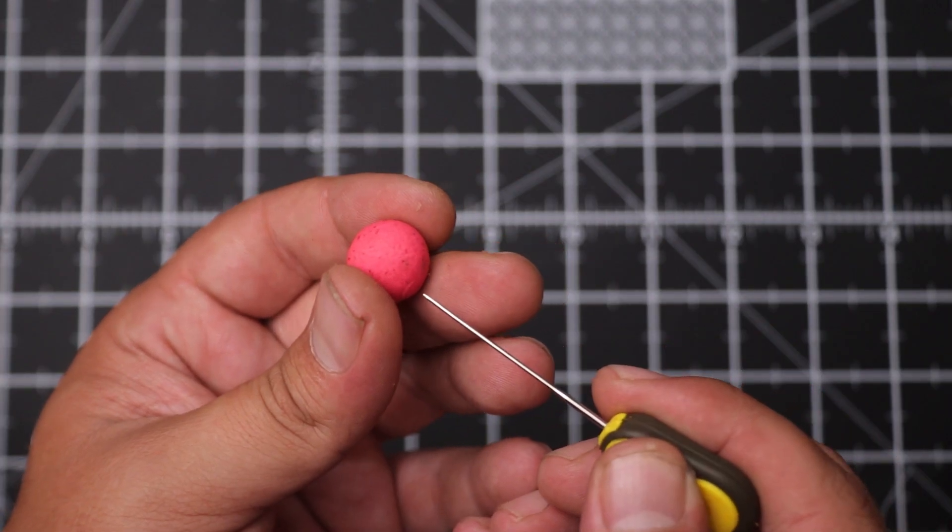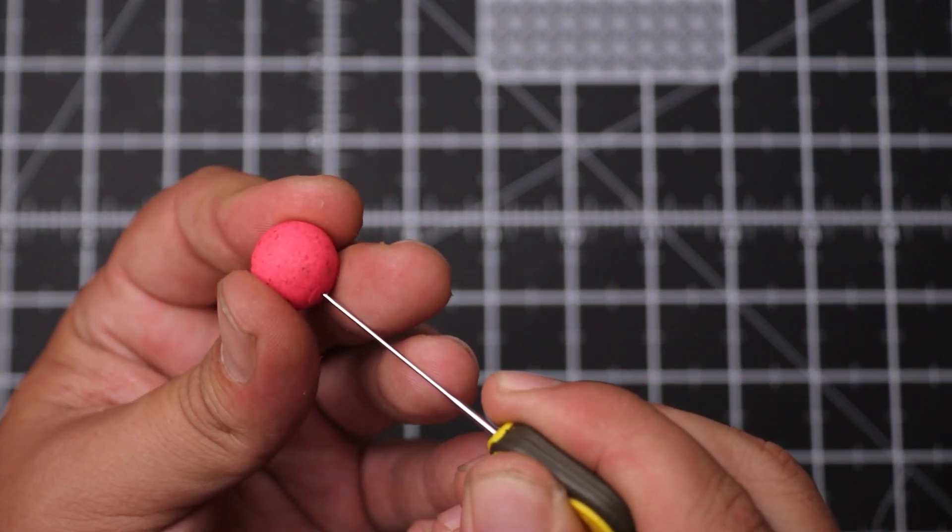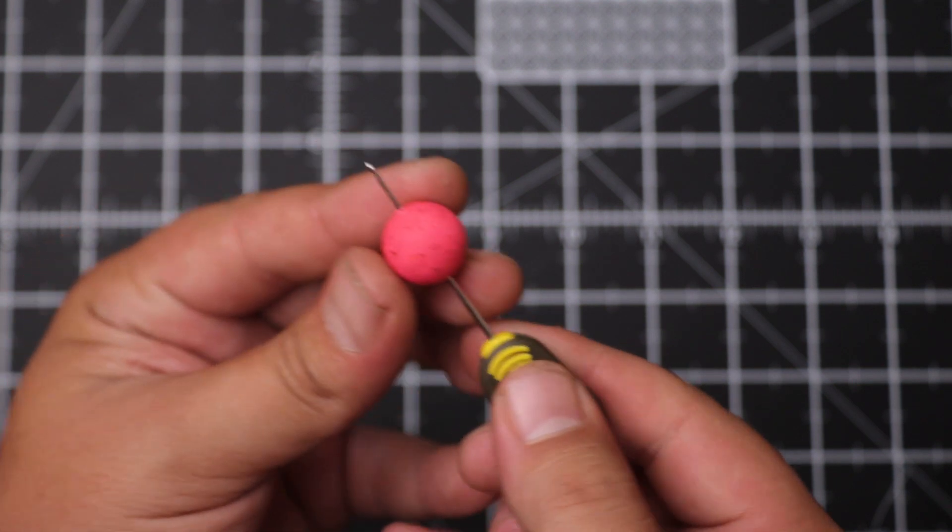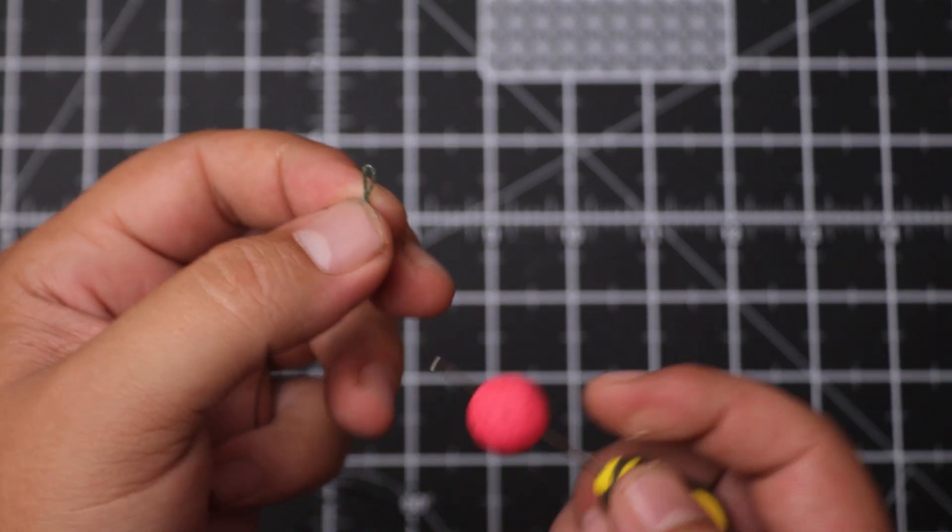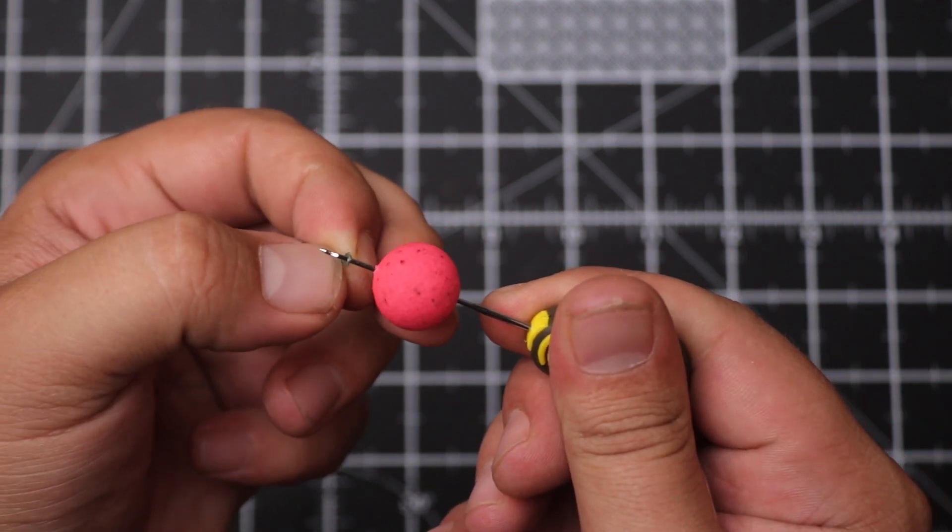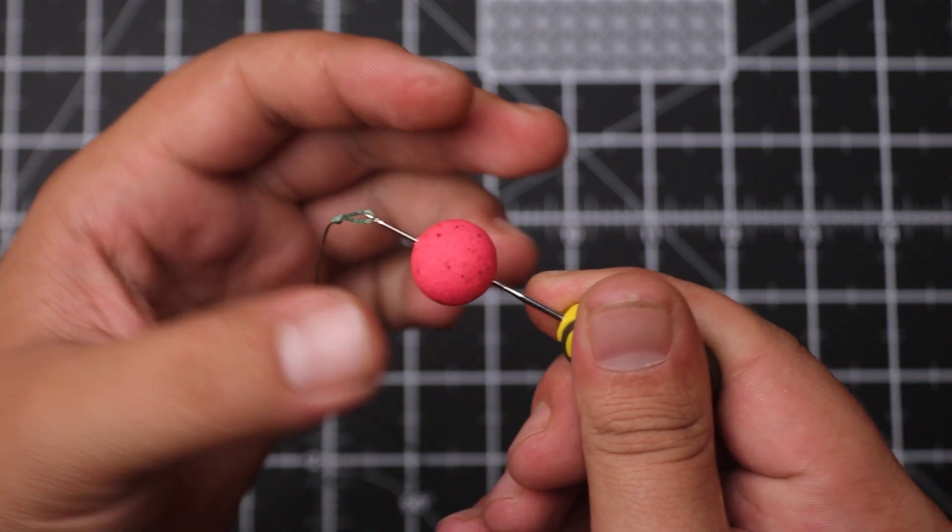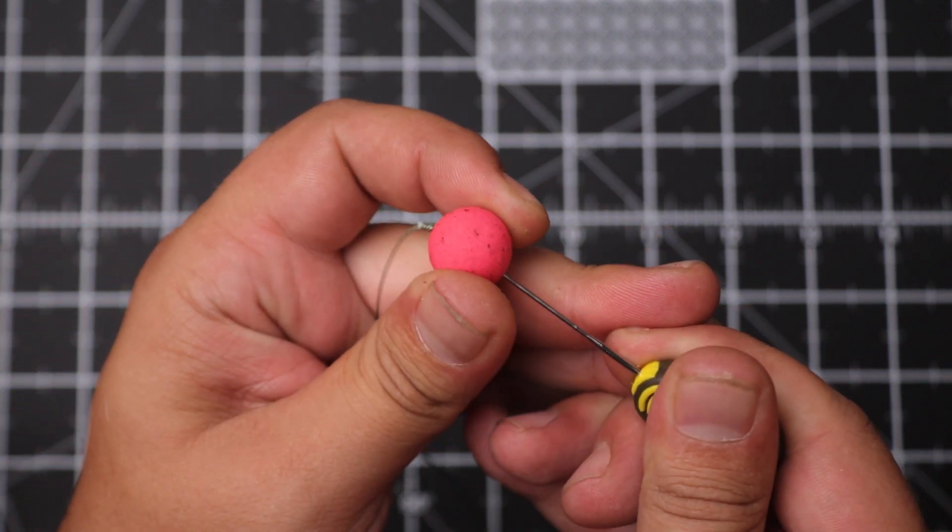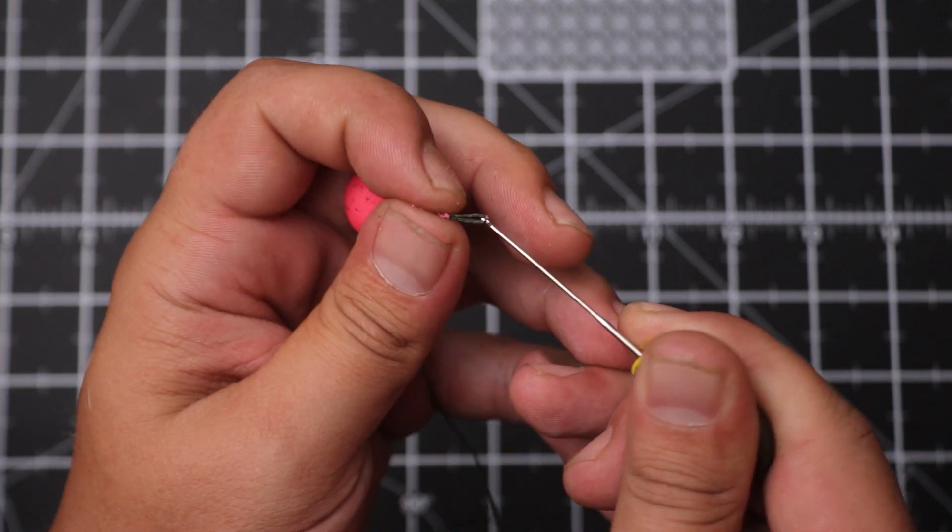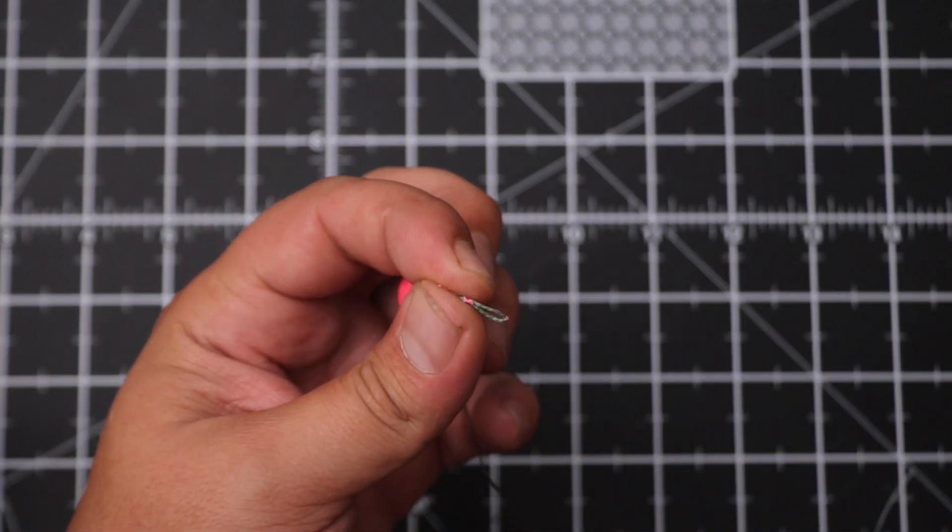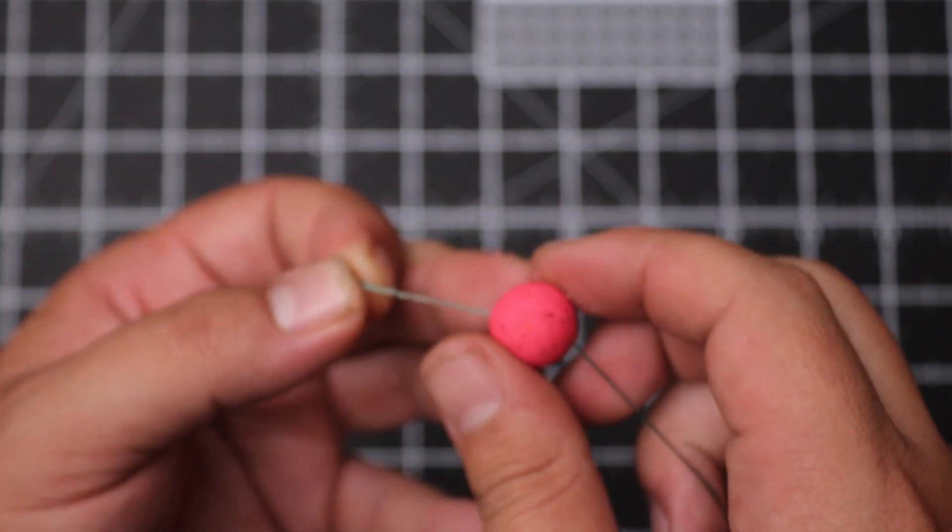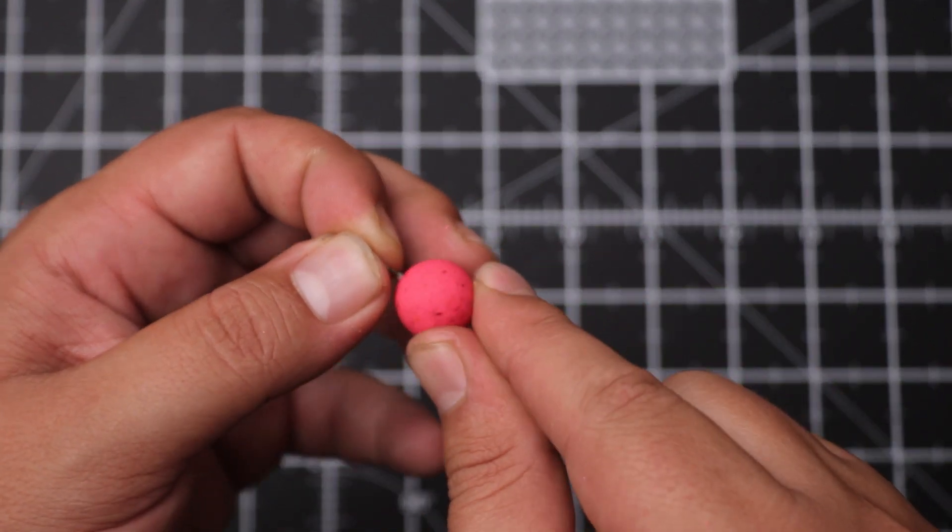Once you've done that, take the size hook bait that you prefer and attach that to the hook link. The reason I'm doing that is just to make sure the hair is long enough and not too short or too long after I've finished tying the rig. I'm going to take my boilie stop and I'm just going to press the hook bait against the boilie stop. That should keep everything in place.